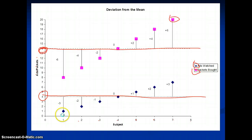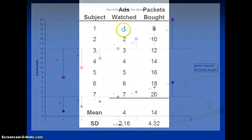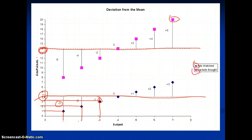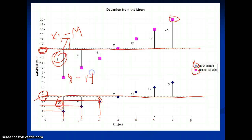Subject 1 on ads watched watched one ad — that is 3 below the average. Subject 2 watched 2 ads — that is 2 below the average. Subject 3 watched 3 ads — that is 1 below the average. We did this both for packets bought and ads watched, giving us the deviations from the mean, which is x_i minus m. In this case, for example, that would be 8 minus 14 for one of the packet values.